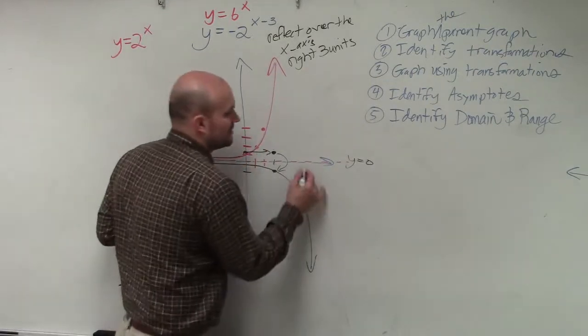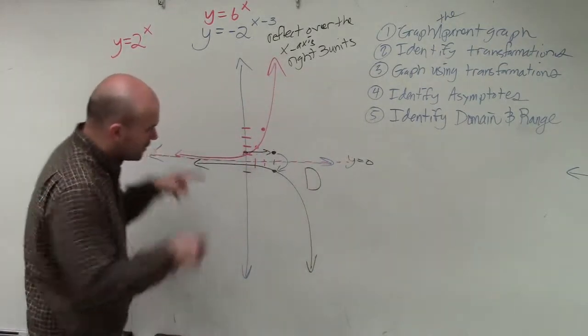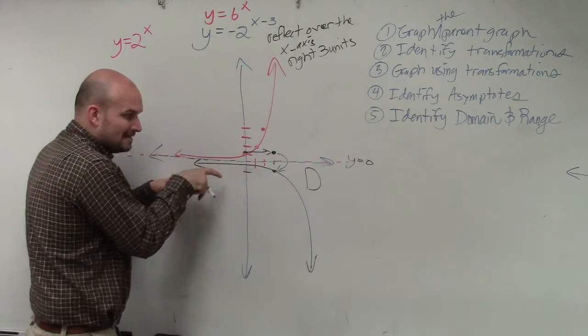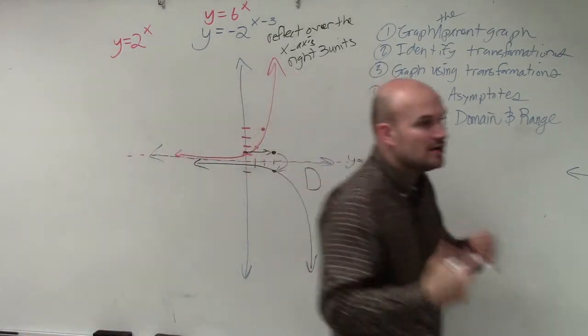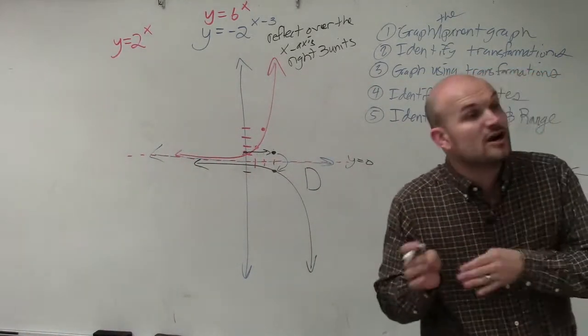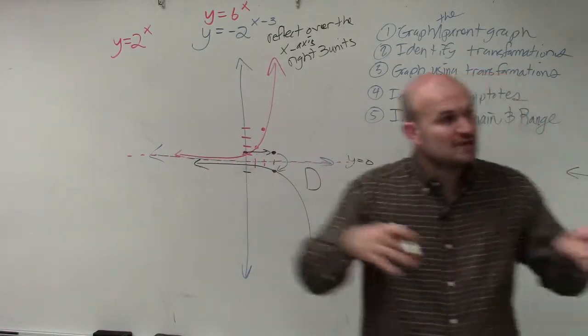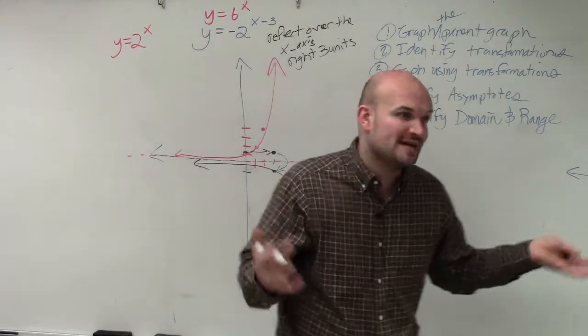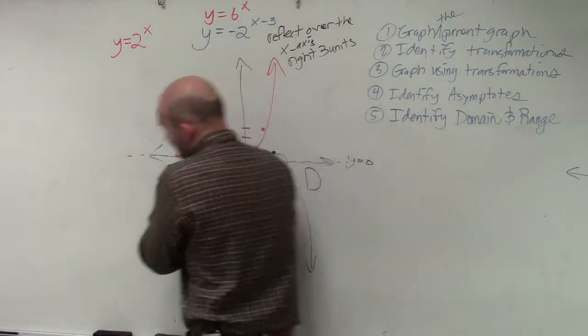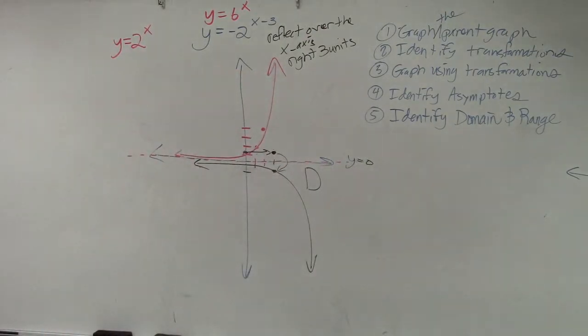Now let's identify the domain and range. We're looking at the black graph here. The domain states the set of all x values. How far to the left does the graph go? How far to the right does the graph go to include all the x values? We look at this graph and say, how far left is it going to go? Infinity.